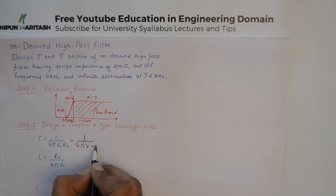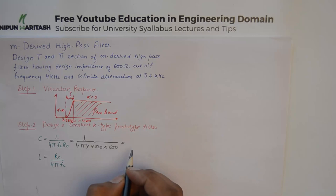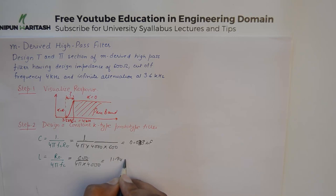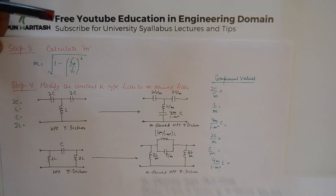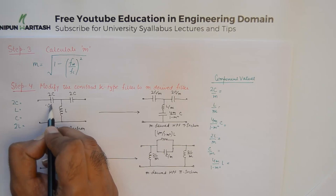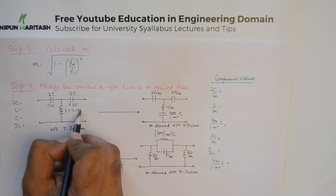...and R₀ equal to 600 ohms, you get C equal to 0.0033 microfarad. Similarly, L = 600 / (4π × 4000), which comes out to be 11.94 millihenry. I always suggest that you substitute these values: L is 11.94 and C is 0.33 — to verify your constant-k type filter before proceeding.